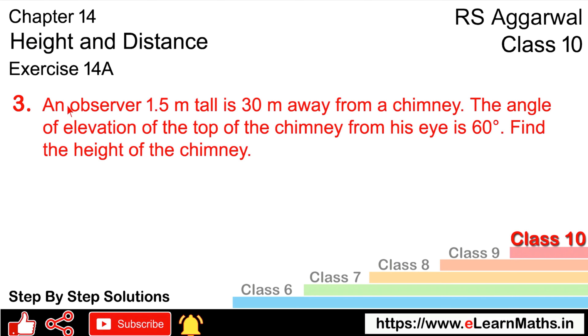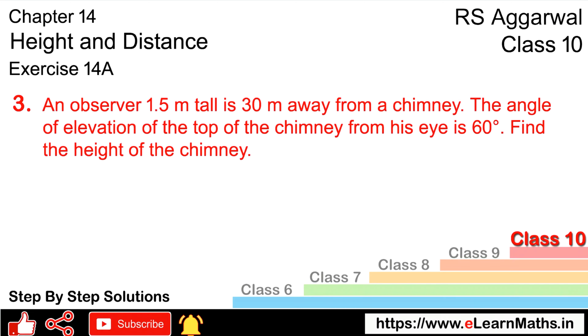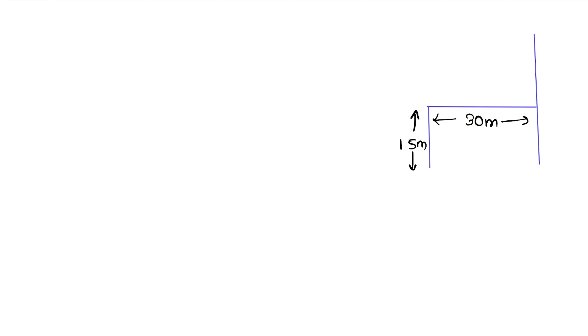Let's re-read the question. An observer 1.5 meter tall is 30 meter away from a chimney. So this person is 30 meter away from the chimney, and the person's height is 1.5 meter. The angle of elevation from his eyes to the top of the chimney is 60 degrees. We have to find the height of the chimney, which means we need to find h.